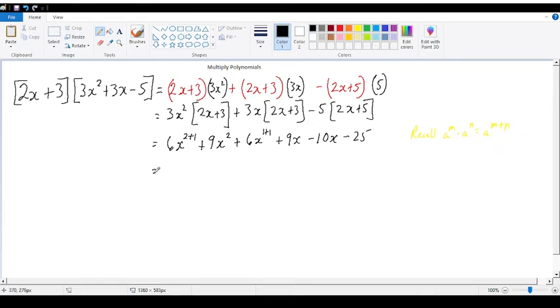So, at this level, we should be able to skip this step. But I'm just showing it just in case. So, this step would then be 6x to the third plus 9x squared plus 6x squared and 9x minus 10x. Well, that is going to give me negative 1x. So, let me put here negative 1x minus 25.